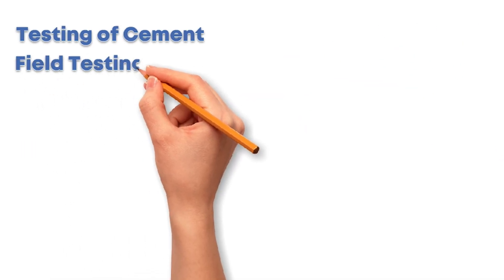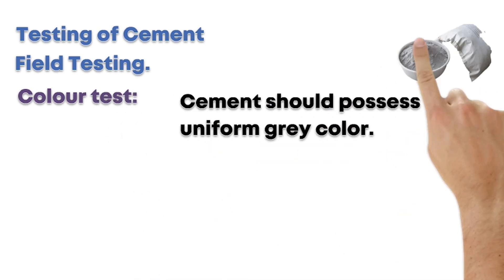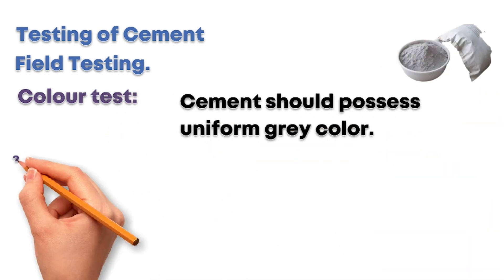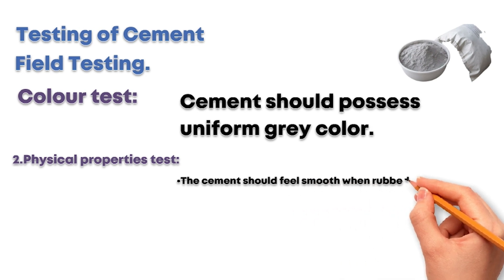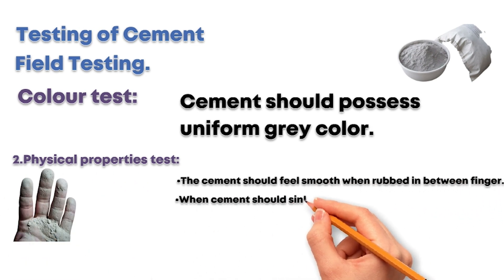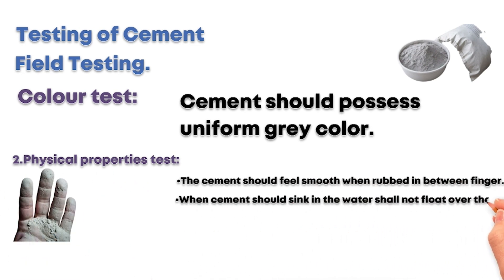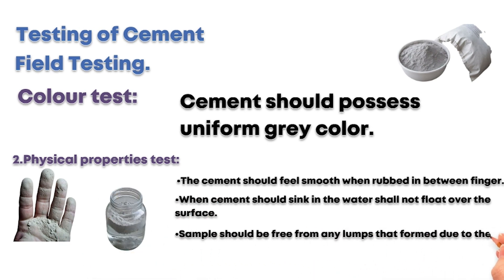Let's discuss the field testing of the cement. 1. The color test: cement should possess uniform gray color. 2. Physical properties test: the cement should feel smooth when rubbed between the fingers. Cement should sink in water and shall not float over the surface. The sample should be free from any lumps that form due to the absorption of moisture.